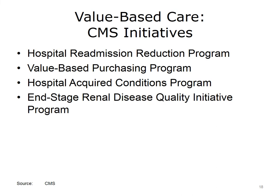The Centers for Medicare and Medicaid Services, or CMS, is the first and largest health care payer to link outcomes to payment. CMS value-based programs reward health care providers with incentive payments for the quality of care they give to Medicare patients, aligned with the Triple Aim. Currently there are four programs: the Hospital Readmissions Reduction Program, which reduces payments to hospitals with excess readmissions; the Value-Based Purchasing Program, which promotes better clinical outcomes by improving patient experience; the Hospital Acquired Conditions Program, which reduces payments for hospitals with excess hospital-acquired conditions; and the End-Stage Renal Disease Quality Initiative Program, which reduces payment to facilities not meeting established performance standards.